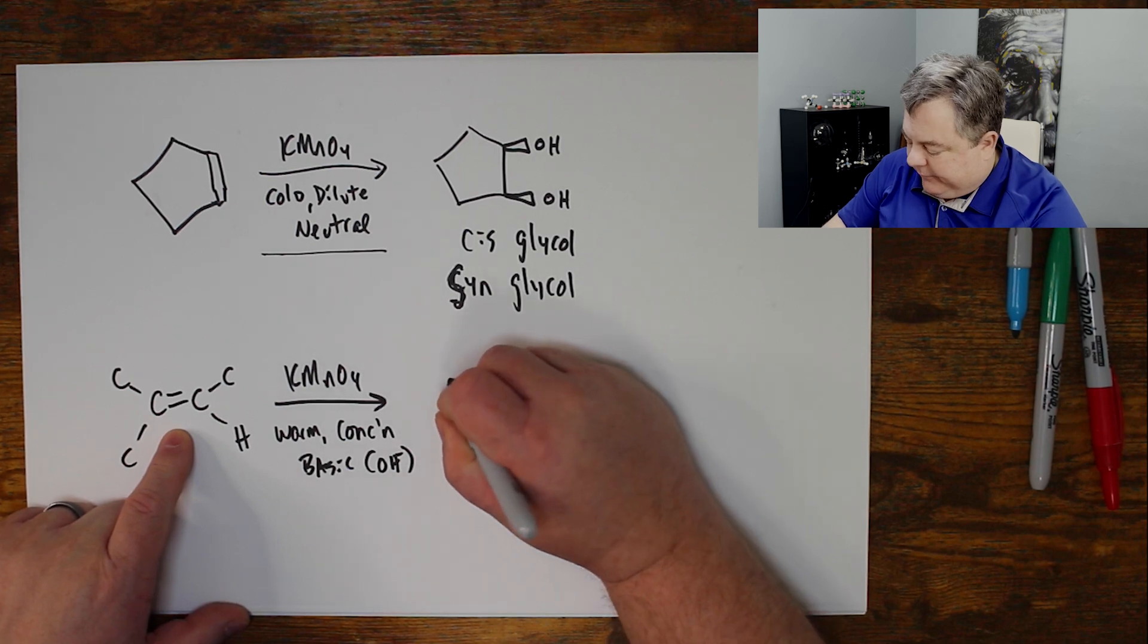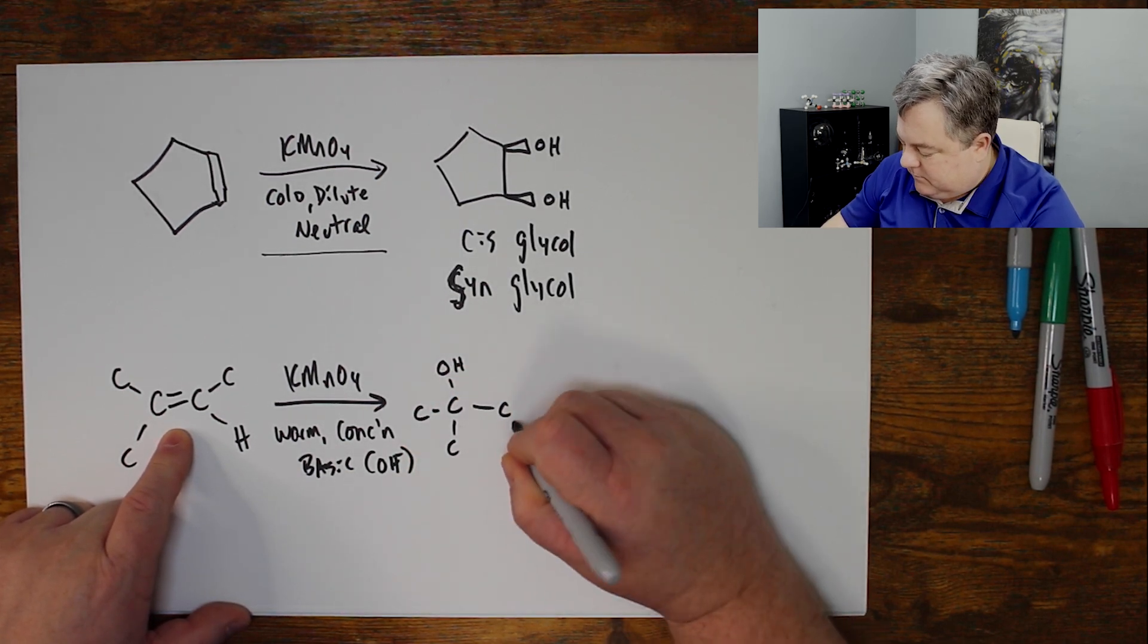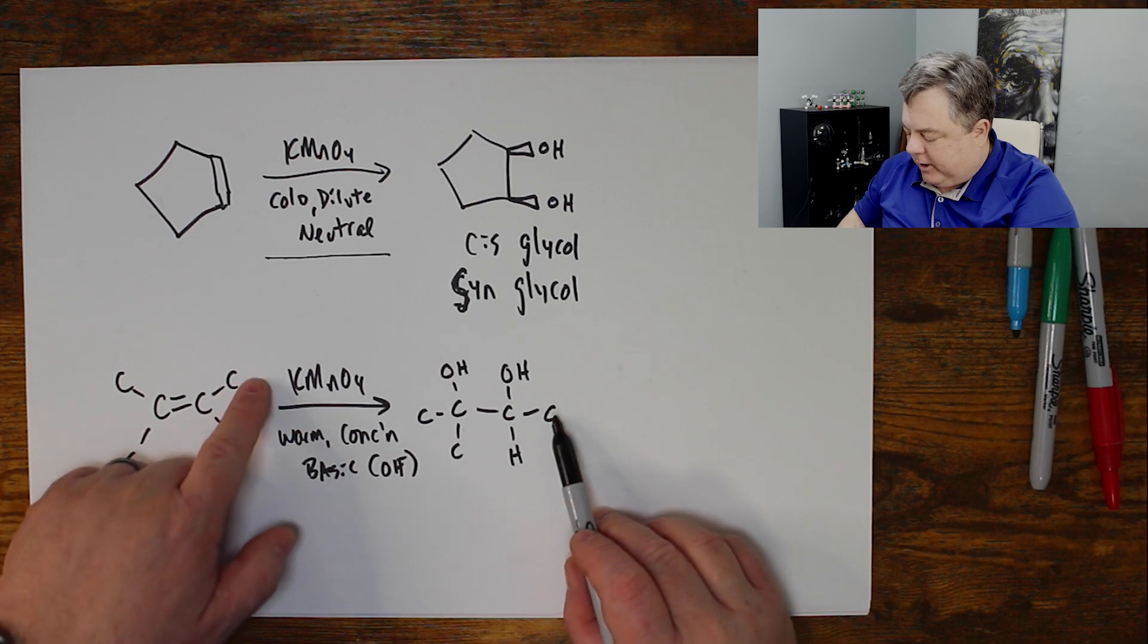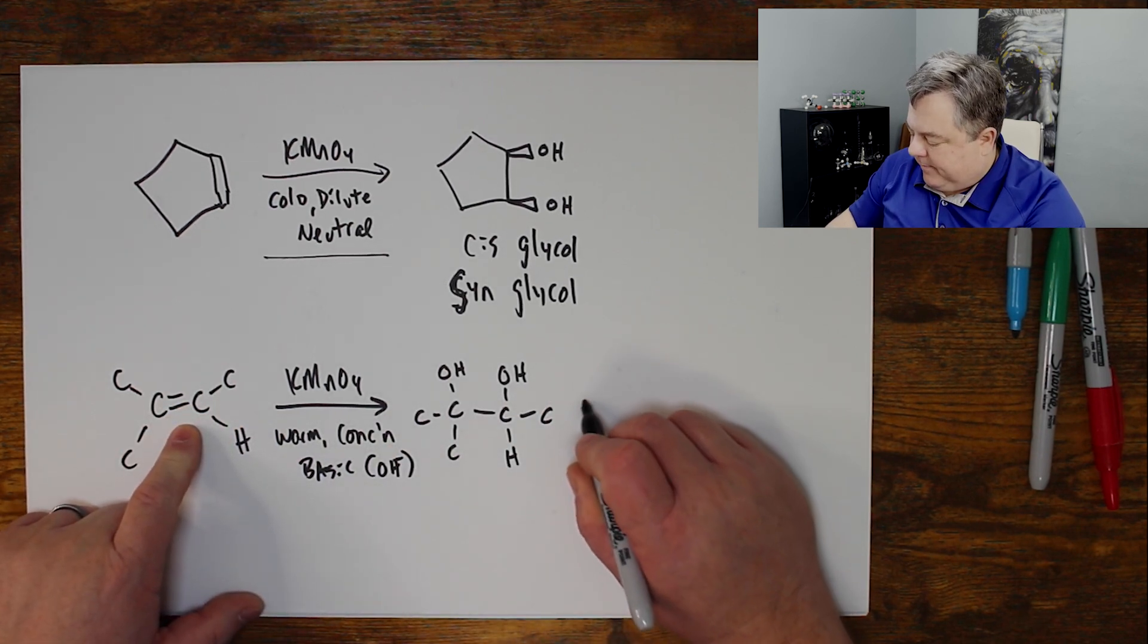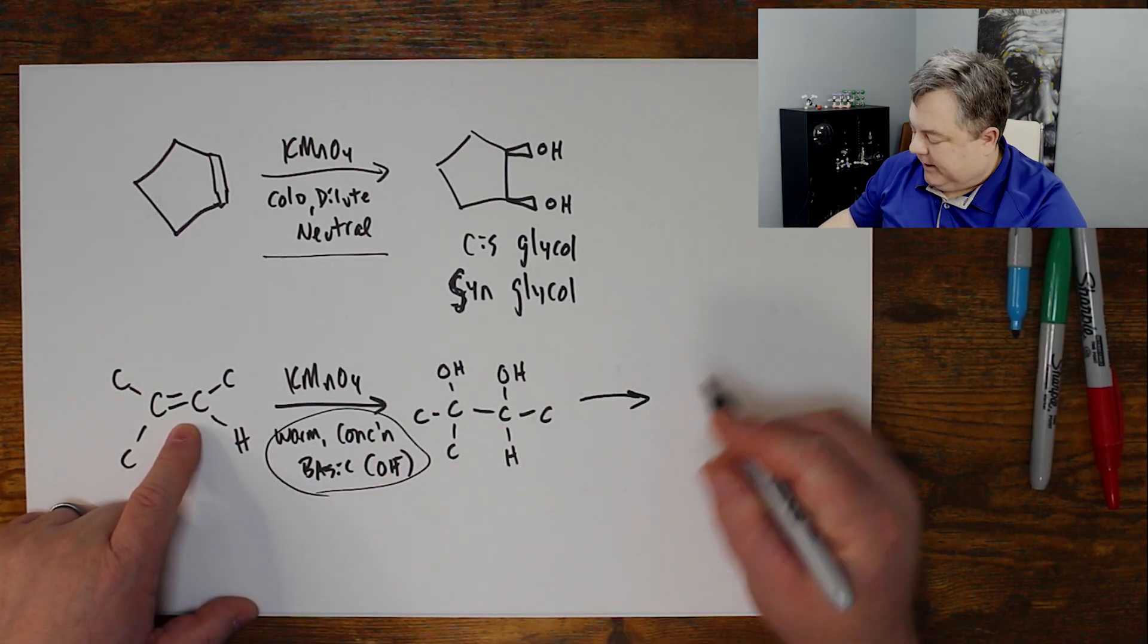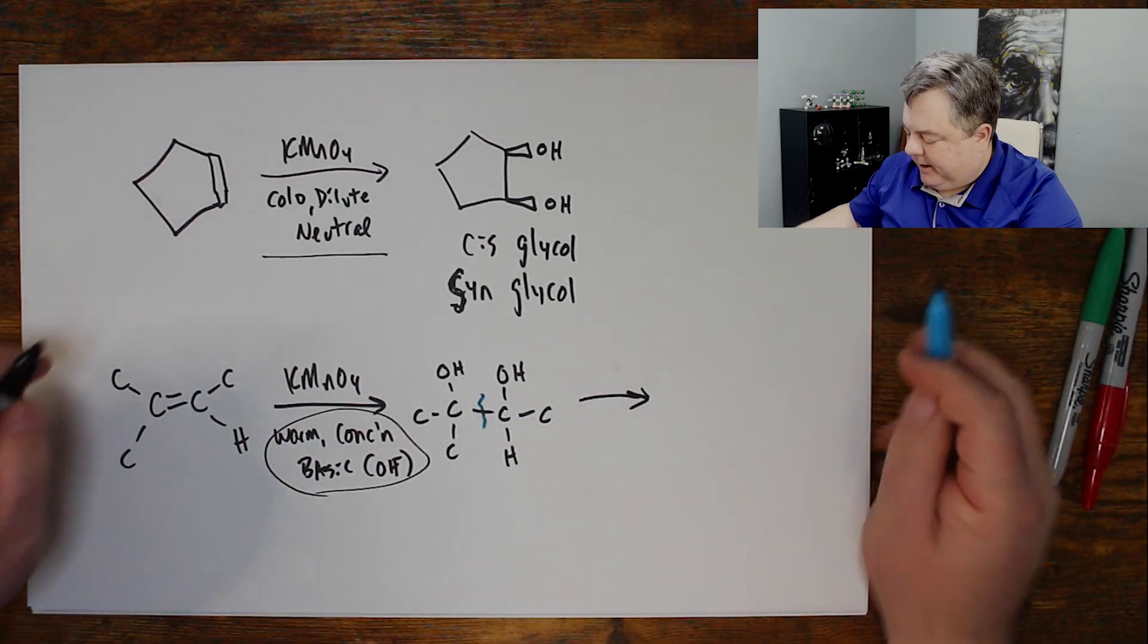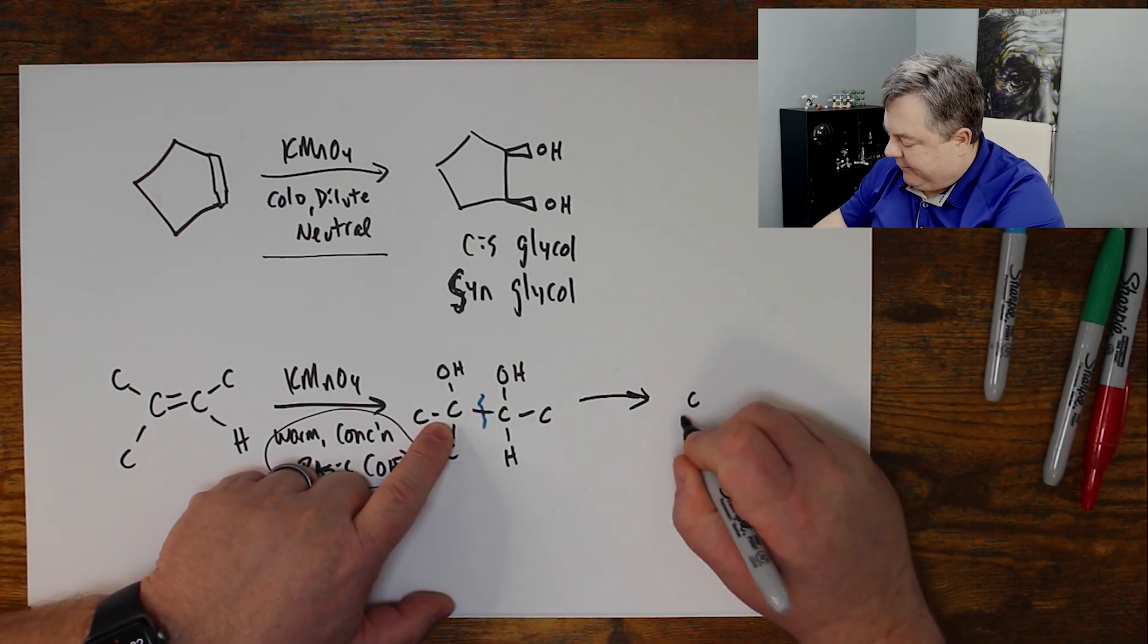Well, the first step we saw is to make this diol. This carbon has two carbons on it. This carbon has a carbon and a hydrogen. But if it's warm, basic, and concentrated, it might keep going. What I want you to see is that this bond right here can be cleaved, and it can further oxidize.